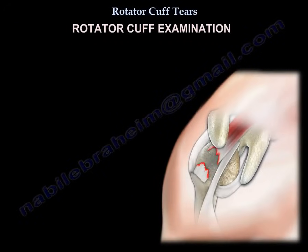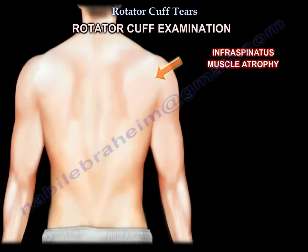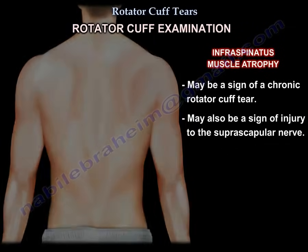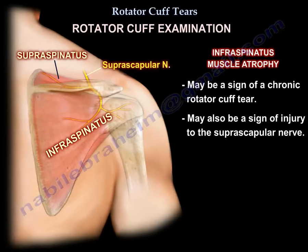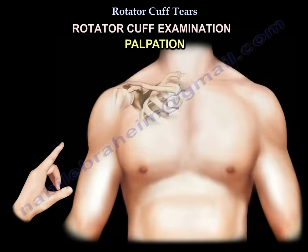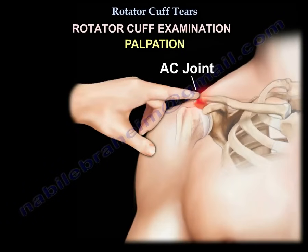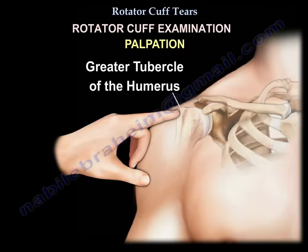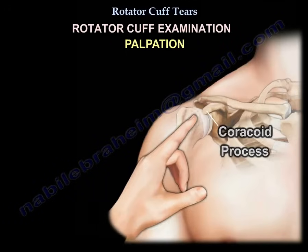For the physical exam, we will inspect first. We may find infraspinatus atrophy, which indicates a chronic tear, but can also mean suprascapular nerve injury. We will palpate the AC joint — it often has concurrent AC joint pathology, so check that — as well as the greater tuberosity, the coracoid process, and the biceps.